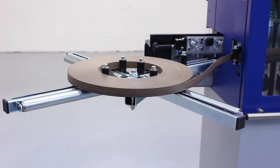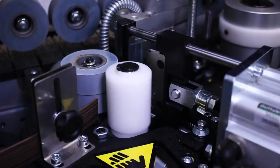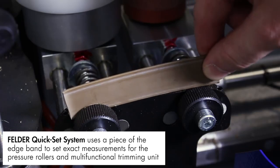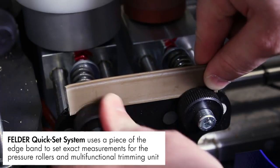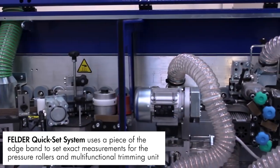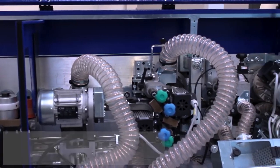The G360 can process both coiled and stripped material, and is easily set up using the Felder quickset system, which uses a piece of the edge banding material to set exact measurements for the pressure rollers and multi-function trimming unit, eliminating the need for time-consuming manual adjustments and allowing for speedy change-overs between edging types.